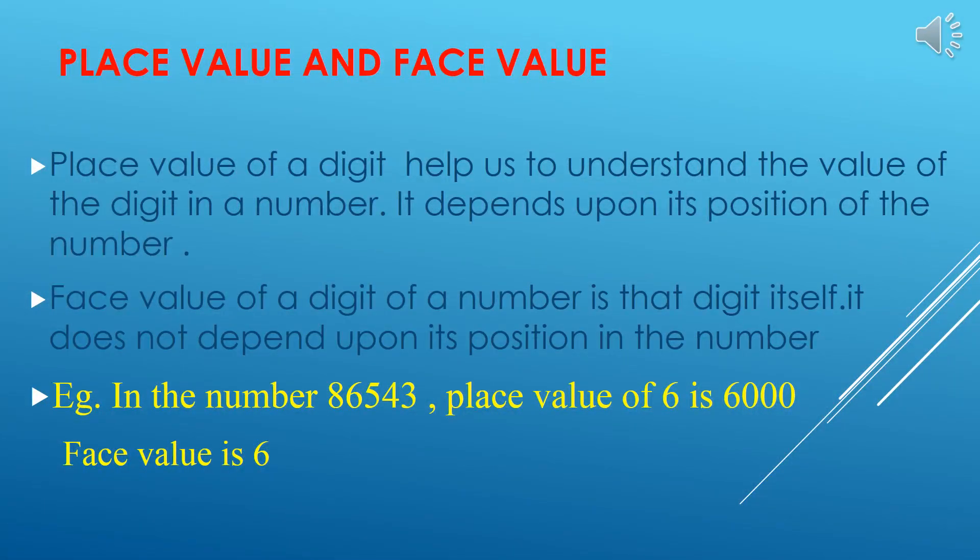Now let's see what is place value and face value. The place value of a digit helps us understand the value of the digit in a number — it depends upon its position in the number. The face value of a digit is that digit itself; it does not depend upon its position. For example, in the number 86,543, the place value of 6 is 6 × 1,000, that is six thousand, and the face value is 6.